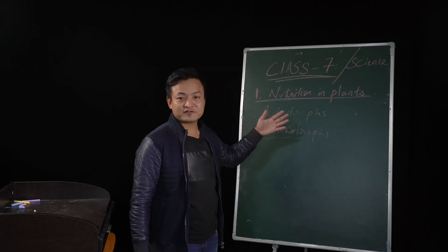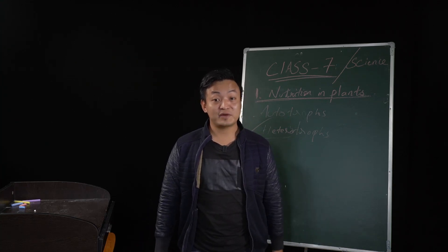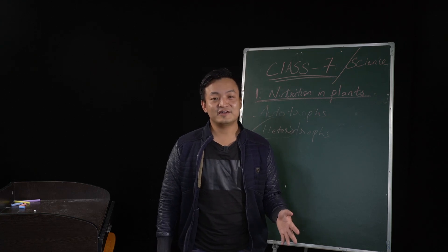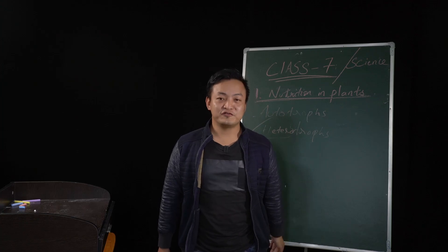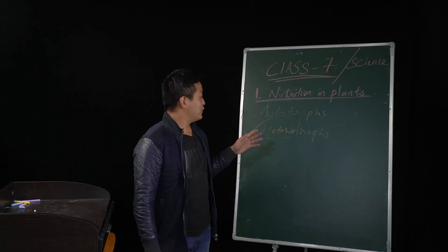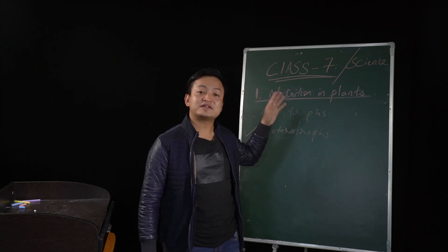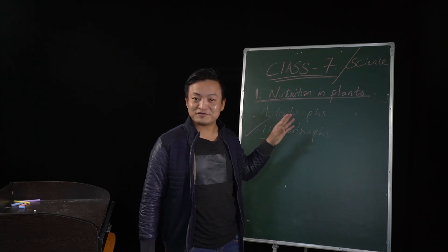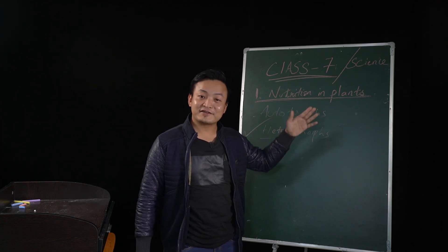Plants are autotrophs because they prepare their food by themselves — I should say they are way smarter than humans. Today we will discuss how plants prepare their food, the same as we prepare food in the kitchen. But some plants are also heterotrophs, which we'll discuss in the later part of the chapter.